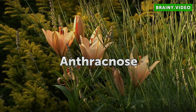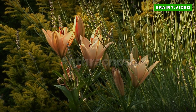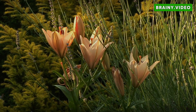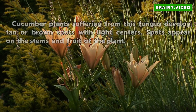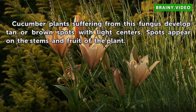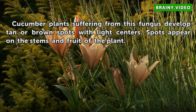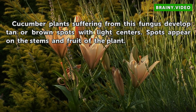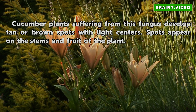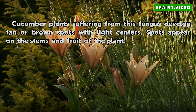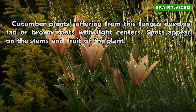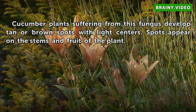Anthracnose. Cucumber plants suffering from this fungus develop tan or brown spots with light centers. Spots appear in the stems and fruit of the plant.